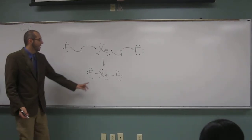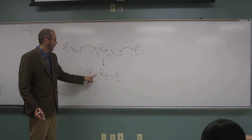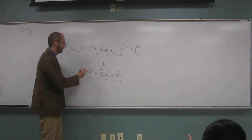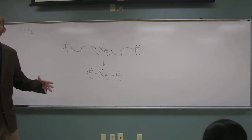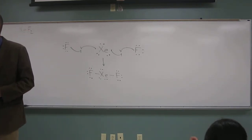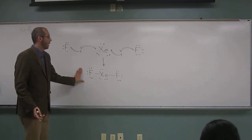Notice that xenon has expanded its valence: two, four, six, eight, ten electrons around xenon. So that's bigger than eight, so it's expanded its valence. So that's the Lewis structure.